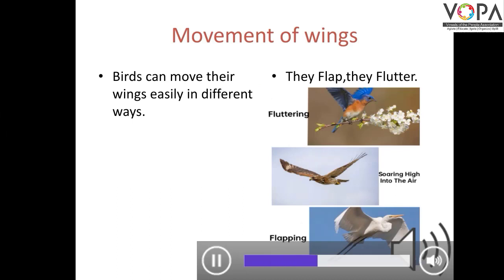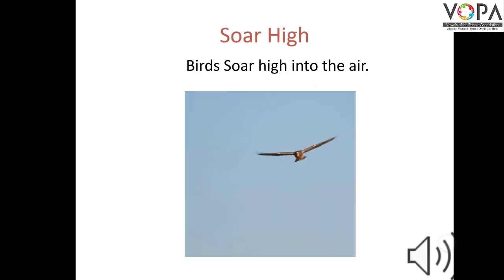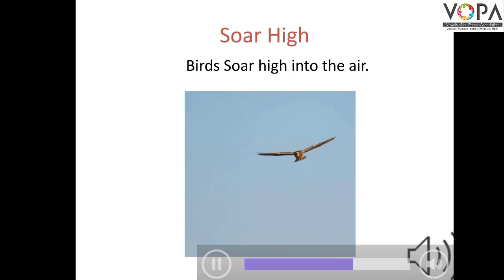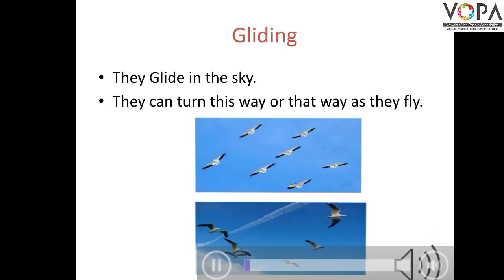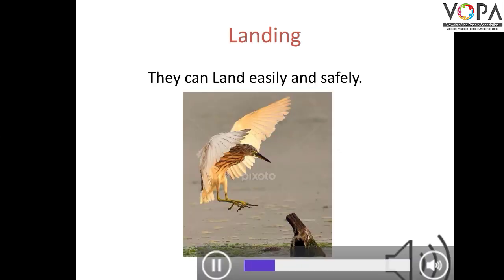Movement of wings — birds can move their wings easily in different ways. They flap, they flutter. Soar high — birds soar high into the air. Gliding — they glide in the sky, and they can turn this way or that way as they fly.